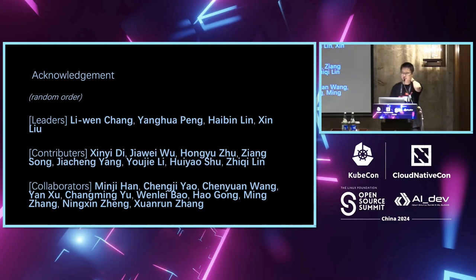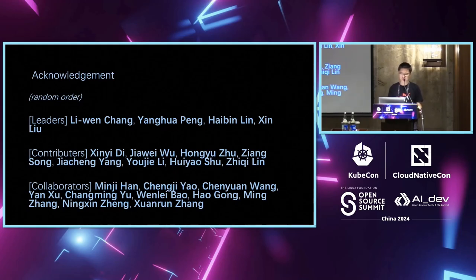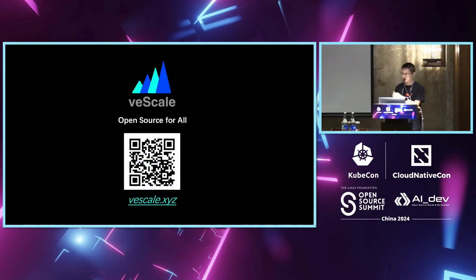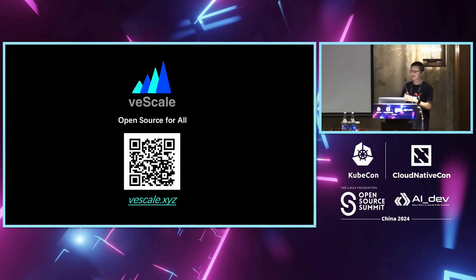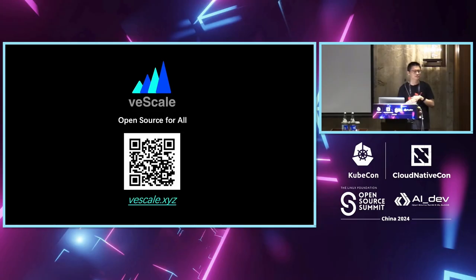These are the contributors and collaborators to the V-Scale project. We also have a lot of excellent interns who contributed to this project — they are not on the list, but they did a great job. This is our QR code for our GitHub repository. One last word: we are hiring. If you have the expertise and share the same vision with us, you are welcome to join our team. Thank you.